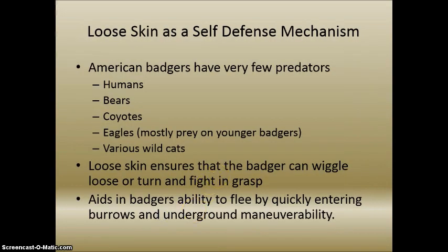Another unique feature is the loose skin used as a self-defense mechanism. American badgers generally have very few predators — the number one predator listed is humans. They have also been known to be attacked by bears, coyotes, and eagles that prey mostly on younger badgers, as well as various wild cats. Their loose skin ensures that the badger can wiggle loose or turn and fight in the grasp of an attacking animal. It also aids the badger's ability to flee by quickly entering its burrow and maneuvering underground.